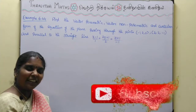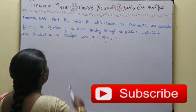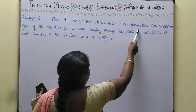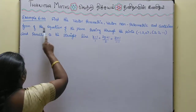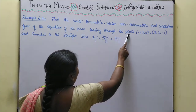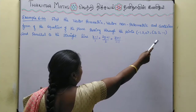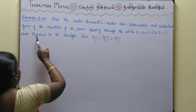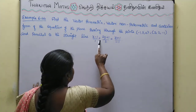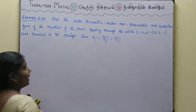Welcome students. Now we will see example 6.44 in this video. Find the vector parametric, vector non-parametric, and Cartesian form of the equation of the plane passing through the points (-1, 2, 0) and (2, 2, -1), and parallel to the straight line (x-1)/1 = (2y+1)/2 = (z+1)/(-1).